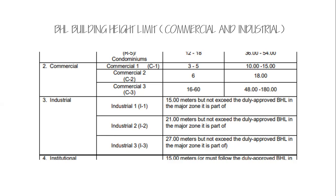For building height limits by story count: C1 allows three to five stories; C2 allows six stories; C3 allows 16 to 60 stories. C2 covers Group E2 and E3, which includes malls — that's why some malls are quite tall. In meters: C1 is 10 meters above natural grade line, C2 is 18 meters, and C3 is 48 to 118 meters above the natural grade line.